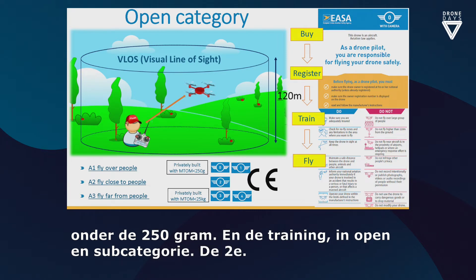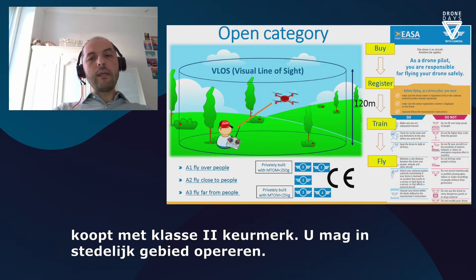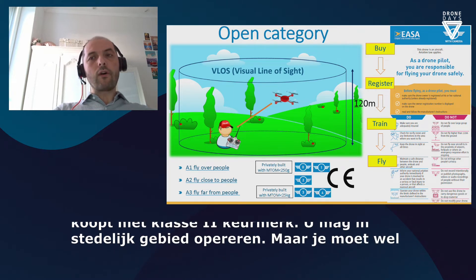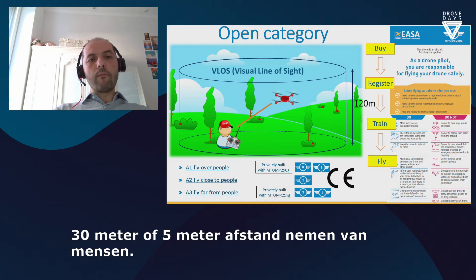If you are buying a drone with a class C2 mark, this means the drone will be below 4 kilos. You are still allowed to operate in an urban area, but you need to keep a distance of 30 meters or 5 meters from people, depending on what features your drone has. In particular, there will be a low speed mode that will allow you to better control your drone and fly closer to people.